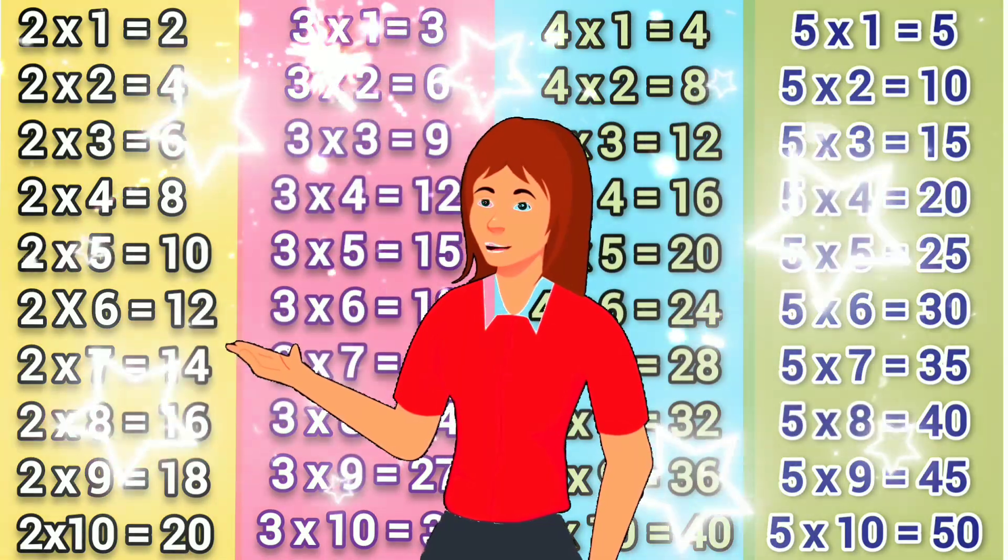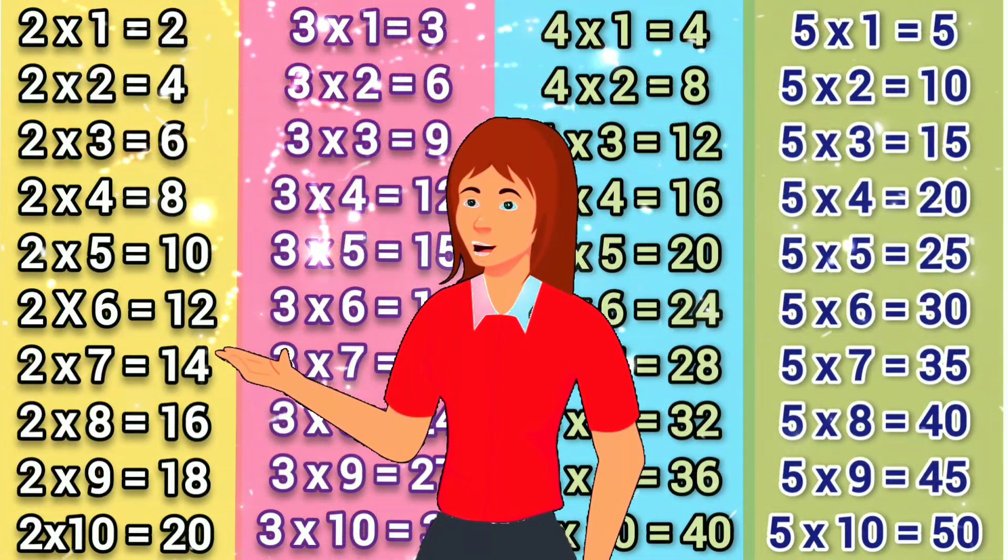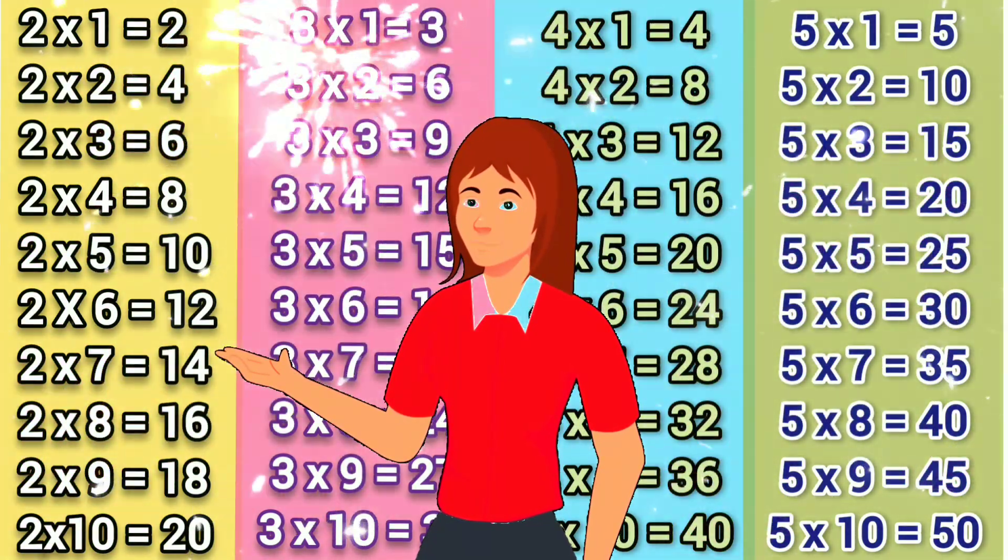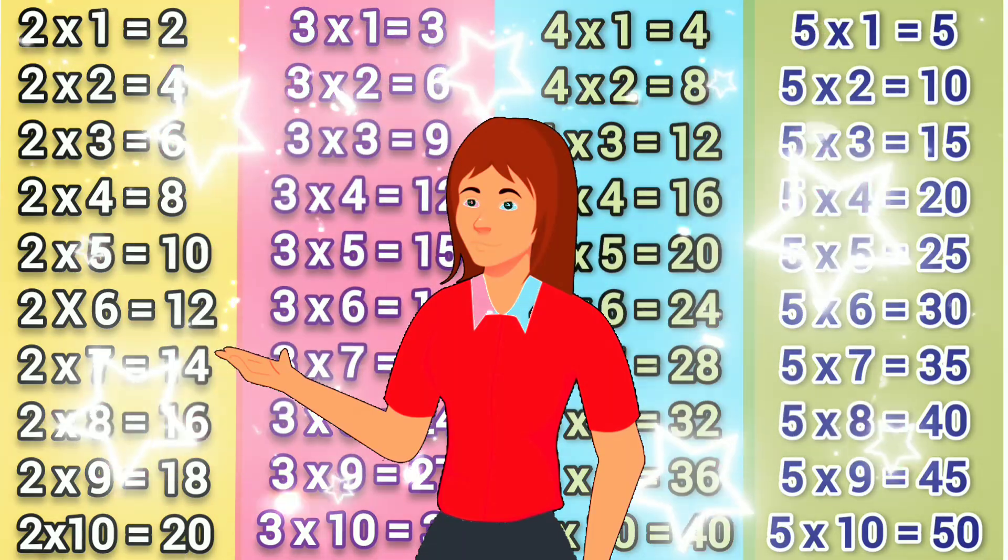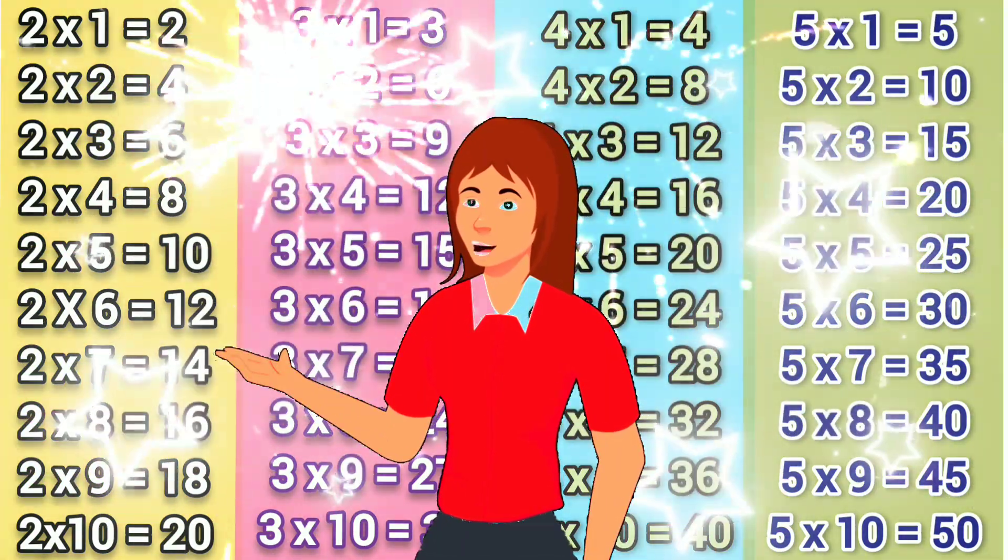2 2's are 4, 2 3's are 6, 2 4's are 8, 2 5's are 10,